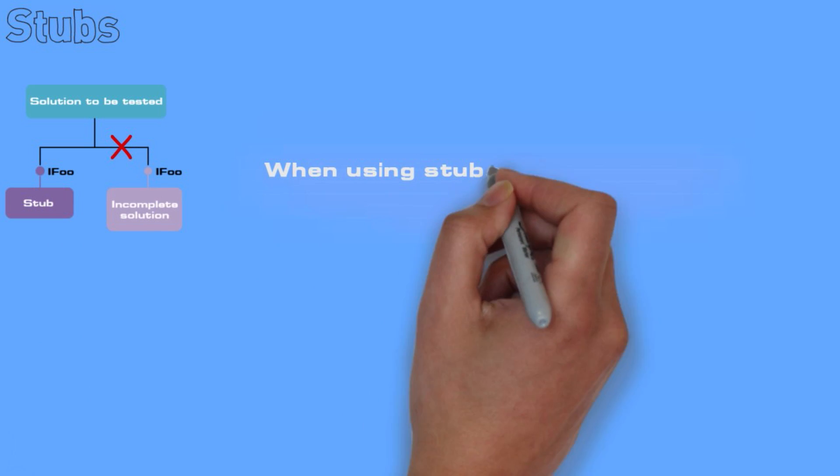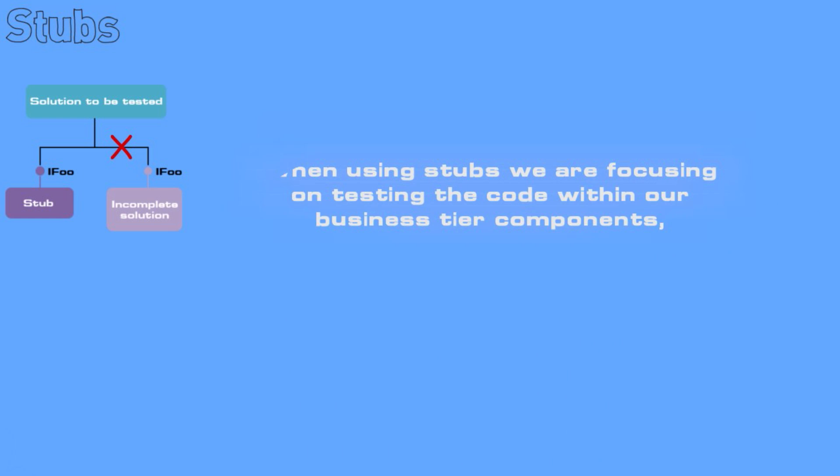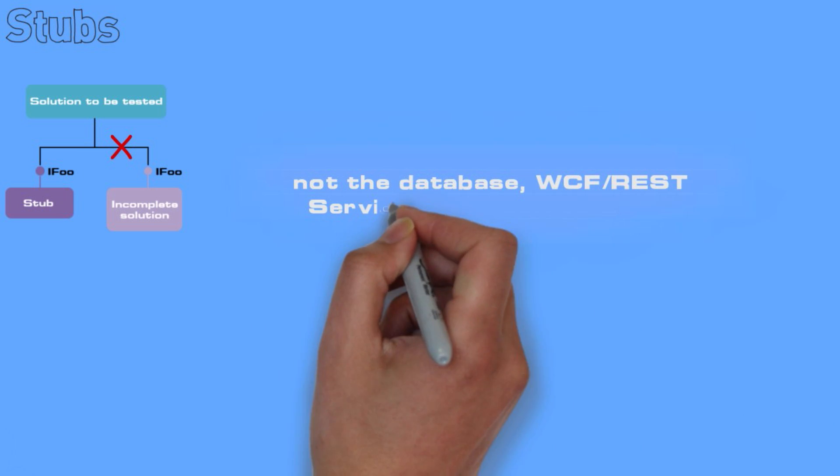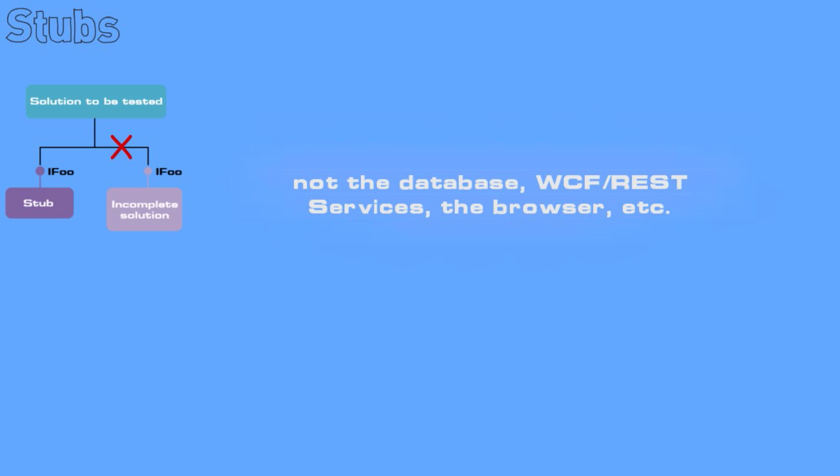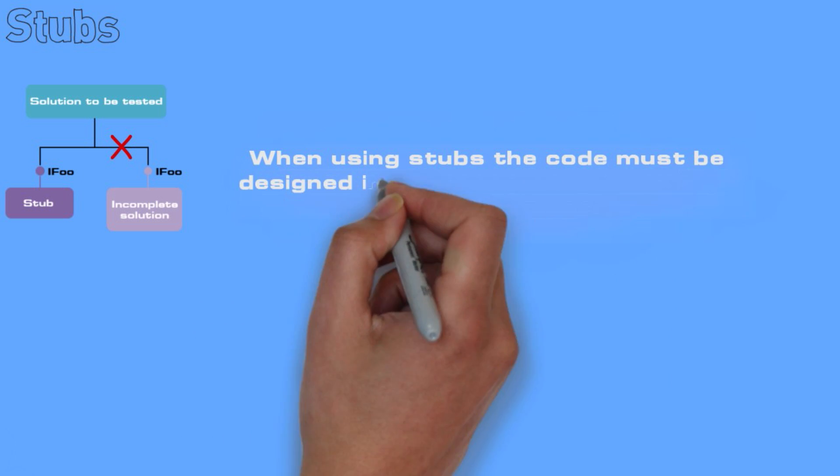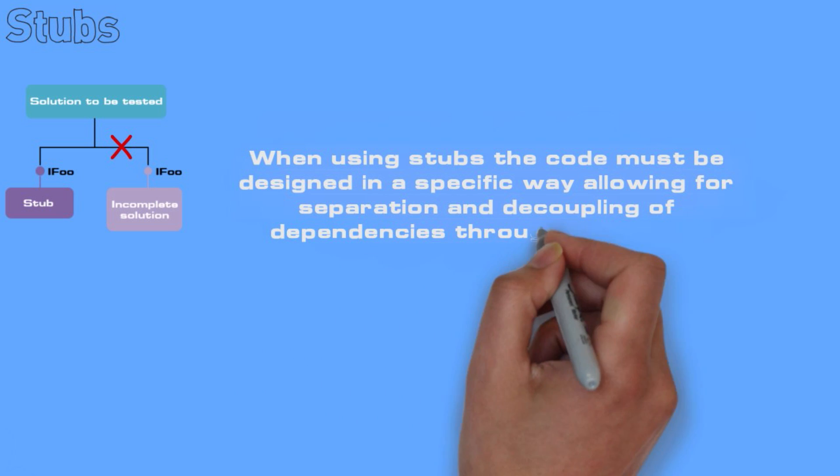STUBS: When using stubs we are focusing on testing code within our business tier components, not the database, WCF REST services, or the browser. Stubs make it possible to test code isolated from its dependencies. When using stubs the code must be designed in a specific way allowing for separation and decoupling of dependencies through interfaces.